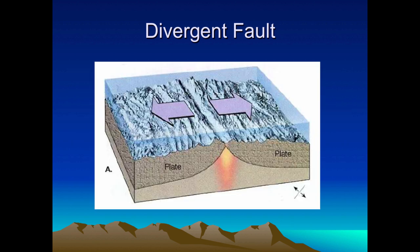As the two plates move apart, the magma — the asthenosphere — rises up, hits the water, cools off, and makes new crust.